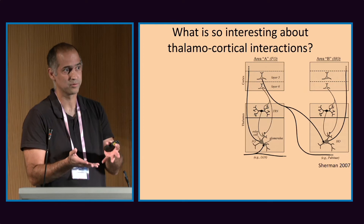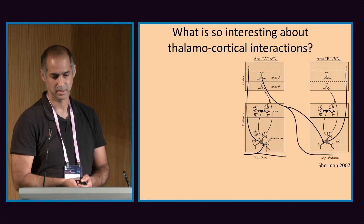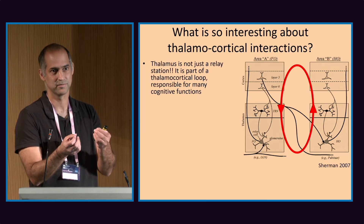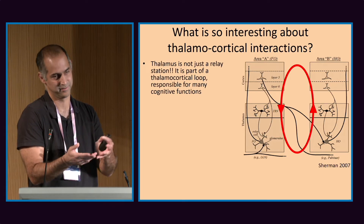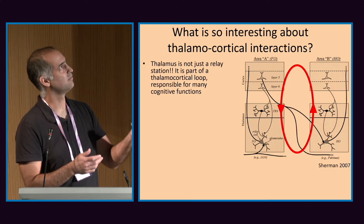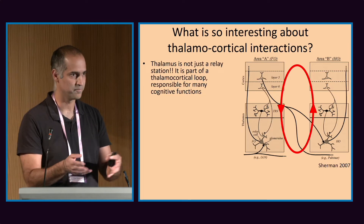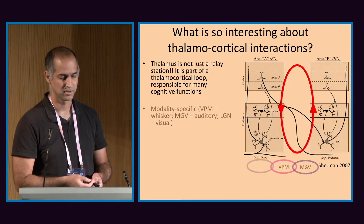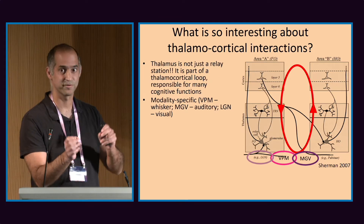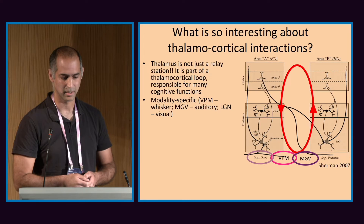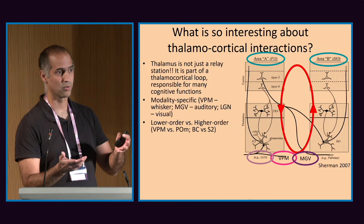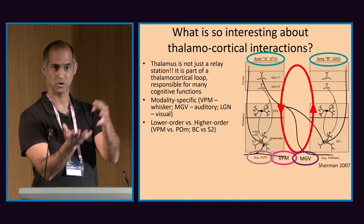What's so interesting about thalamocortical interactions? We already know that the thalamus is not just a relay station — that's already known. There's actually a loop between thalamus and cortex that is thought to maintain many different cognitive functions. Classically, the thalamus is divided into different modalities: visual, auditory, whisker in mice. We also know there are higher-order and lower-order areas.